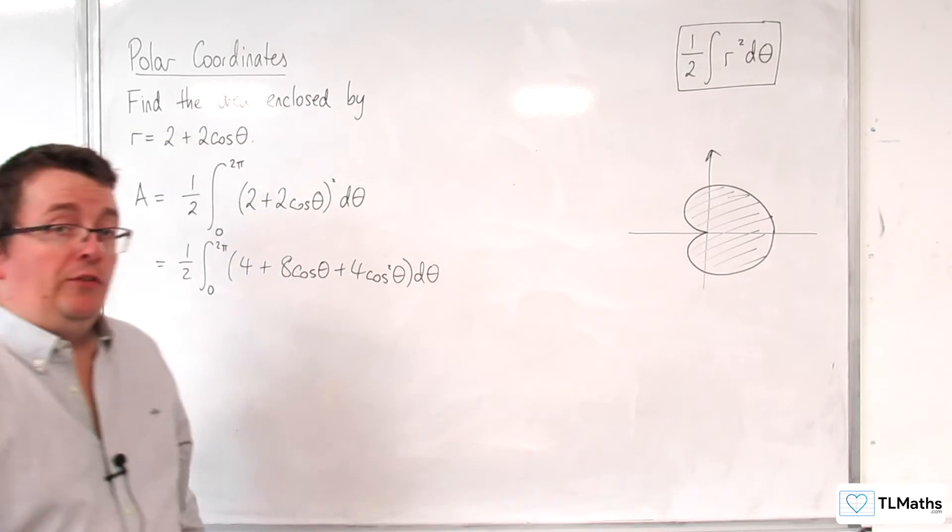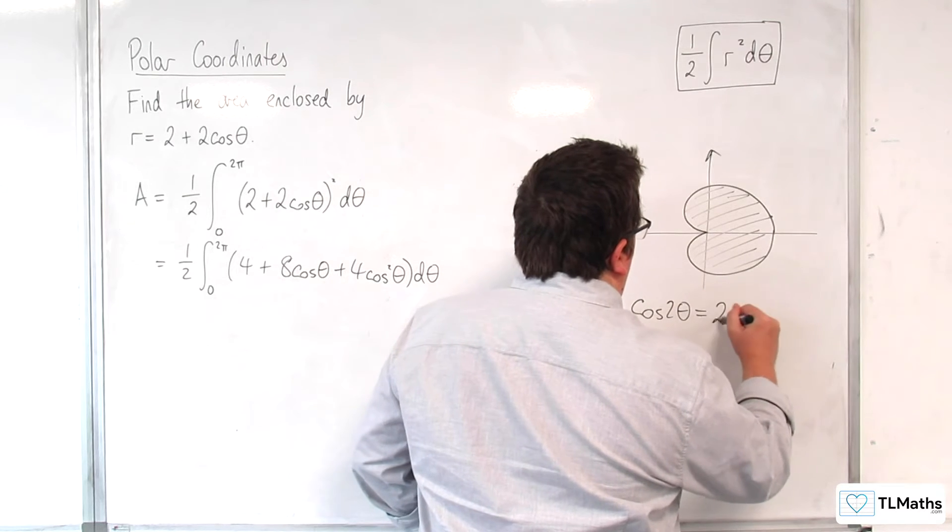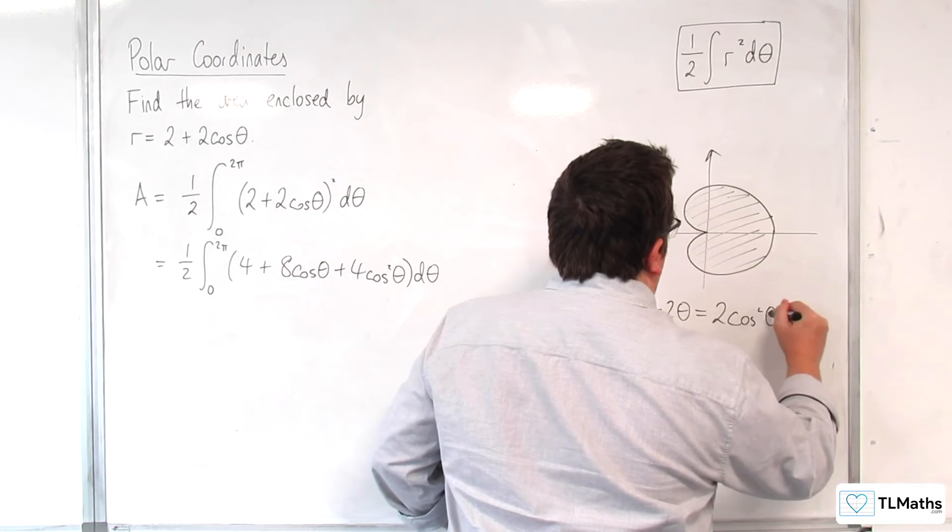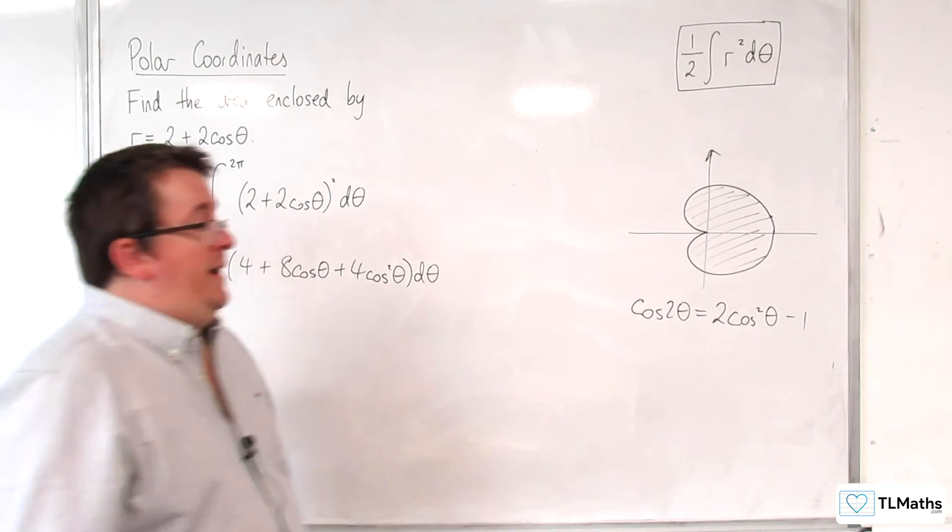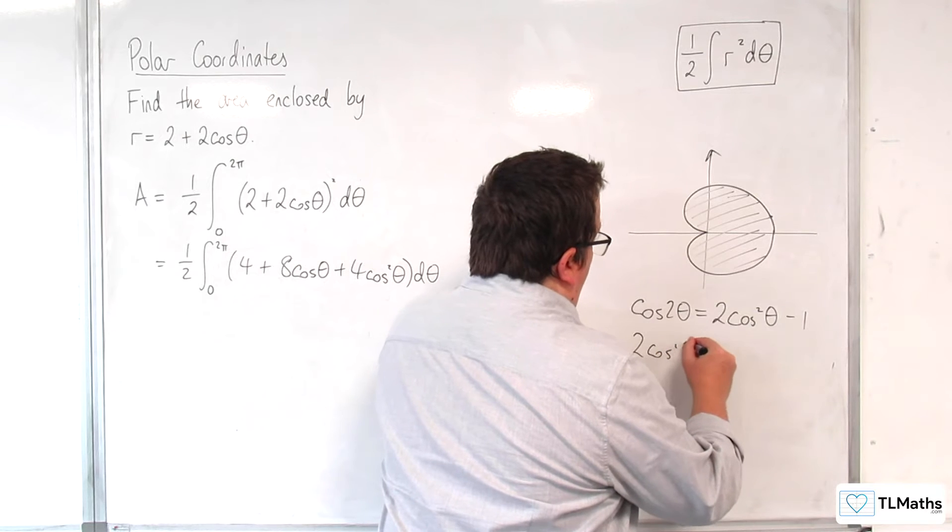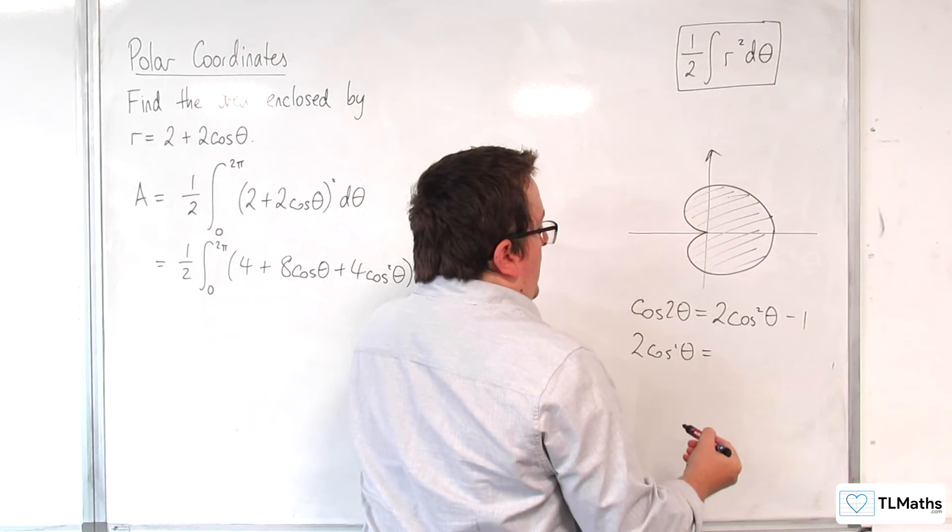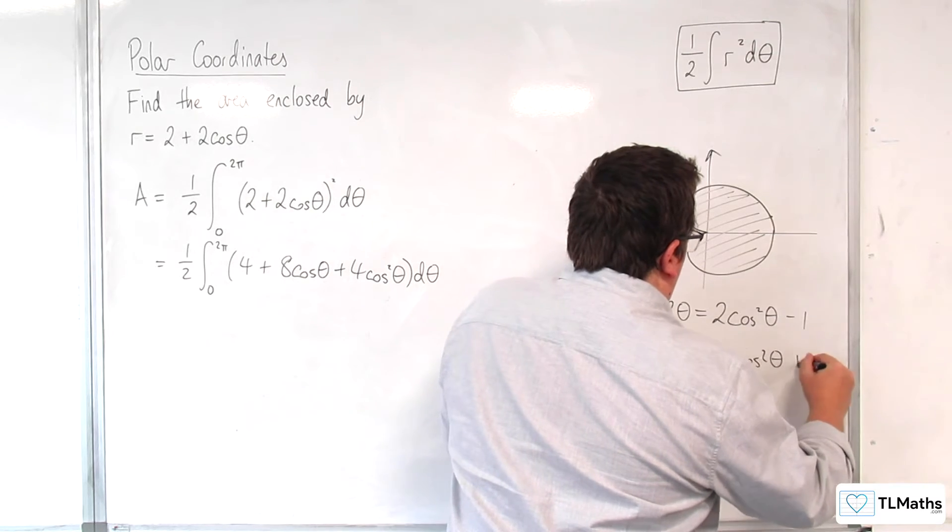So I'm going to have to use the double angle formula for that. So cosine 2 theta was 2 cosine squared theta minus 1. So rearranging that, I can write 2 cosine squared theta as being equal to cosine 2 theta plus 1.